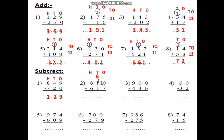Then I will complete my subtraction. 10 minus 7. After 7: 8, 9, 10. It's 3. 6 minus 1. After 1: 2, 3, 4, 5, 6. It's 5. 8 minus 6. After 6: 7, 8. The answer is 253.